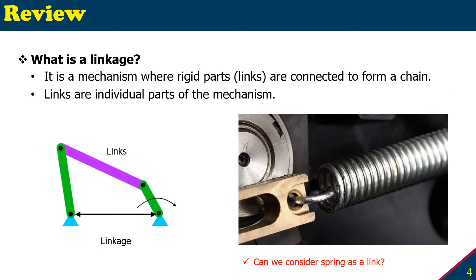So what is a linkage? A linkage is a mechanism where rigid parts, that is the links, are connected to form a chain. As you see in the previous slide, the parts are connected to form a chain. The links are individual parts of the mechanism. If you see on the left image here, these are the links, three links, and they are connected with pin joints. These are linkages.